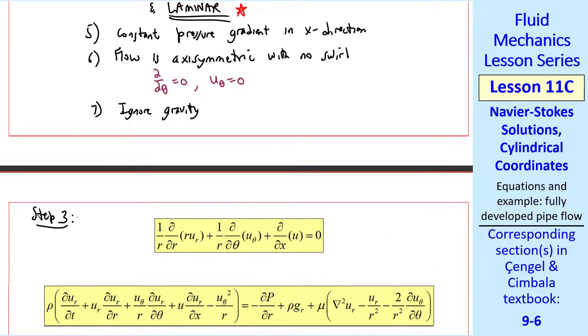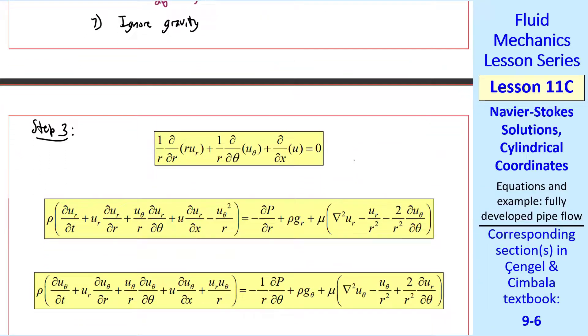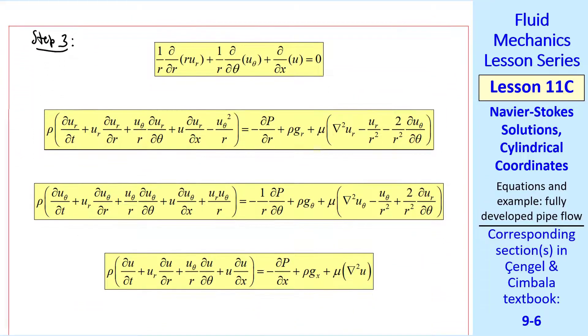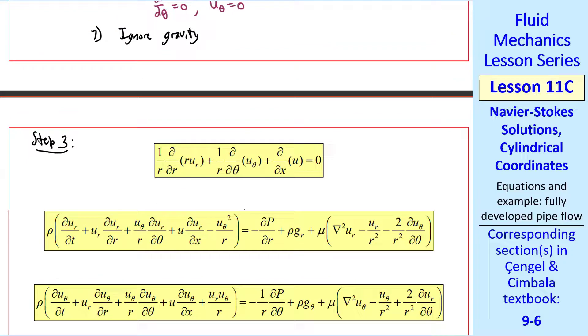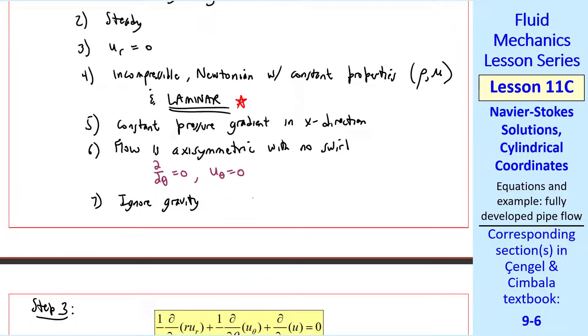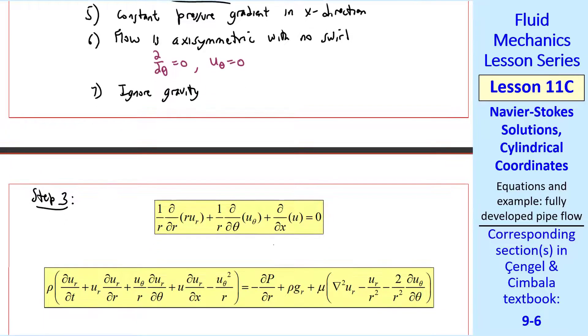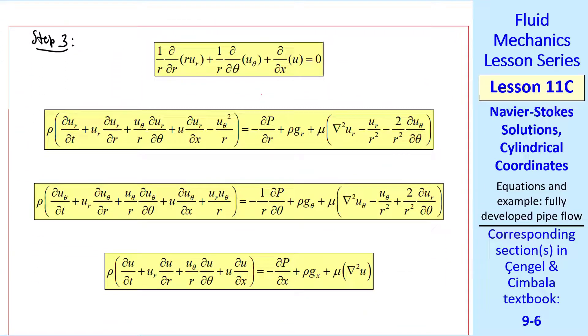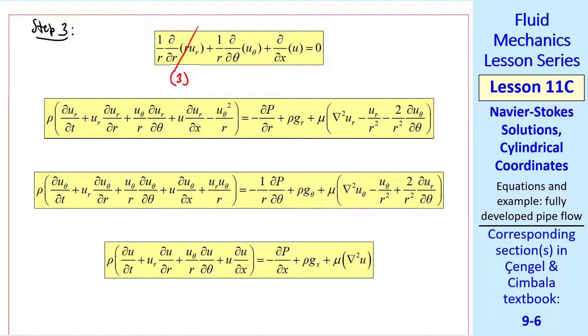Step three is to write out all the differential equations and simplify them as much as possible. The reason why I like to number my approximations and assumptions is that we now apply these to these equations and put the number underneath each term that I cross off. This one goes away by approximation three. This one by six. So ∂u/∂x is zero. This is our continuity equation.